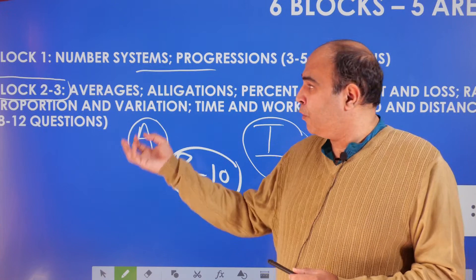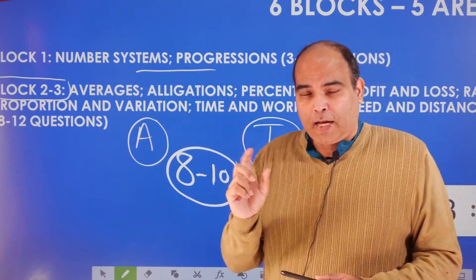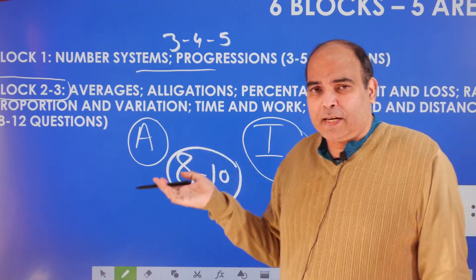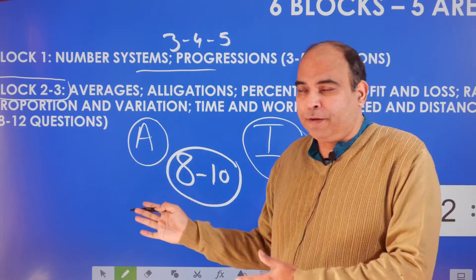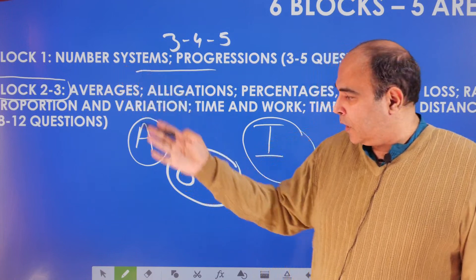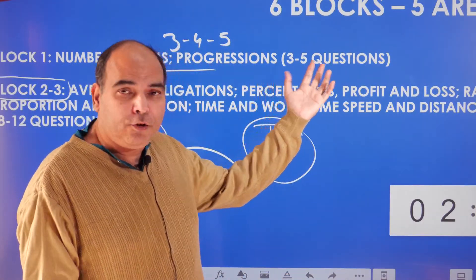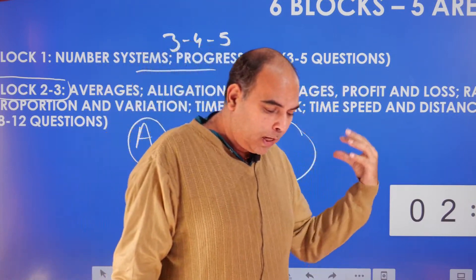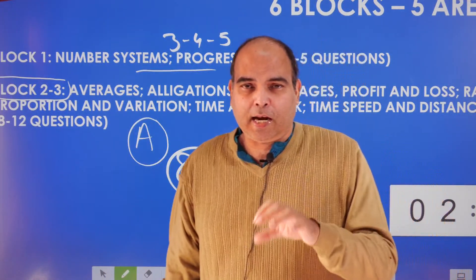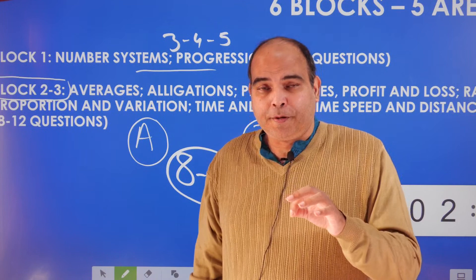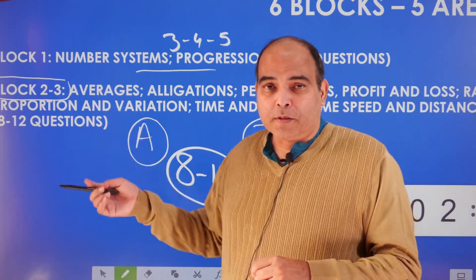Order of coverage will be Block 2-3 followed by Block 1, which is number systems and progressions. That should take you around three to five weeks. If you're a repeater, you try to finish this off in around five weeks, Block 2-3 in around two and a half to three weeks, unless you have been weak at this area. Broadly, you'll get three to five questions from Block 1. So in total, half the paper will be sorted if you know these two areas well.